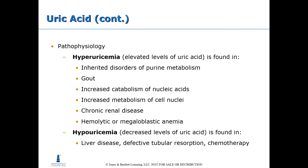Hyperuricemia — elevated levels of uric acid — is found in inherited disorders of purine metabolism, gout, increased catabolism of nucleic acids, increased metabolism of cell nuclei, chronic renal disease, and hemolytic or megaloblastic anemia. Hypouricemia — decreased levels of uric acid — is found in liver disease, defective tubular reabsorption, and with chemotherapy.